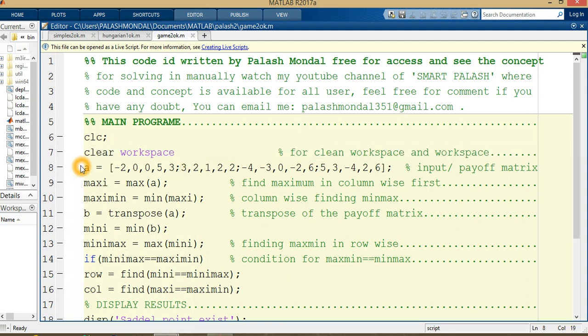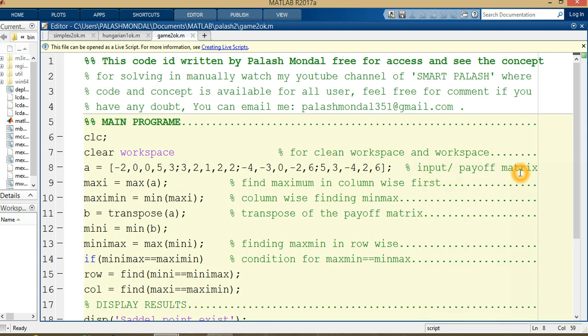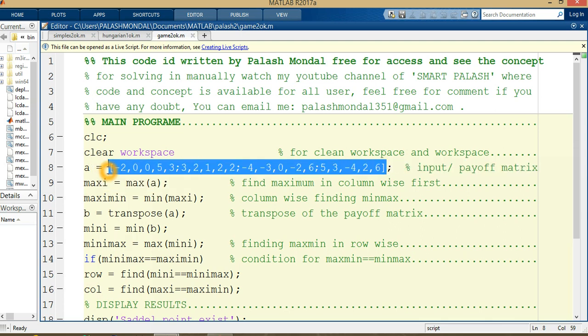This is the cost matrix, 2x7 game, and this is the matrix. This matrix is also known as input or payoff matrix. This is the maximum equal to max of A. If we're taking the maximum of this matrix, then we get the maximum in each column wise. So it is column wise getting the maximum value and this maximum value stored in maxi.